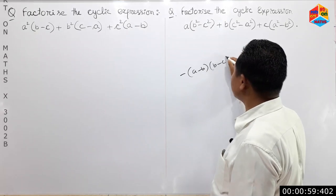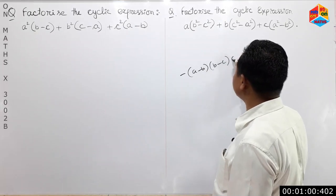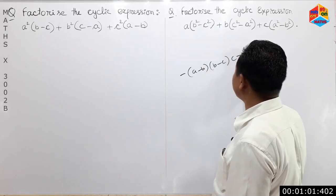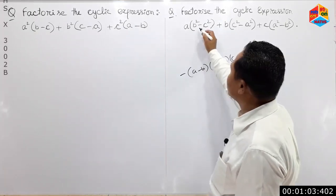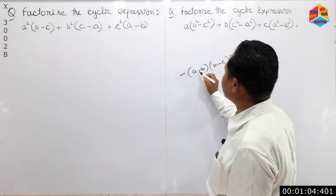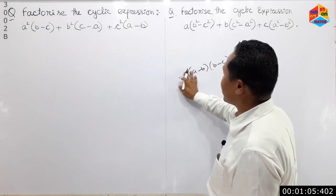(b minus c), (c minus a). This is the factorization of the expression a-squared c minus a.